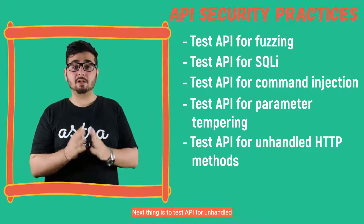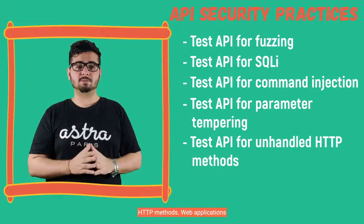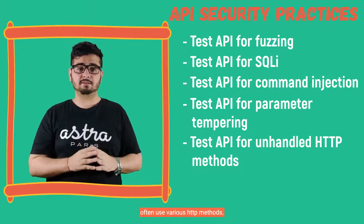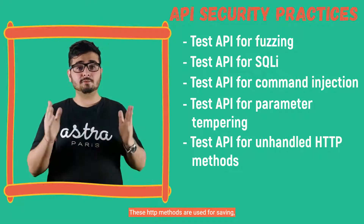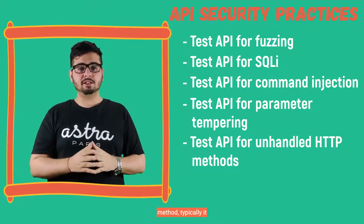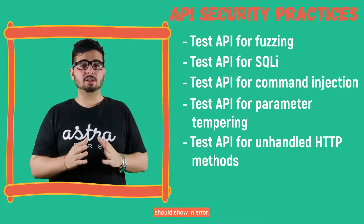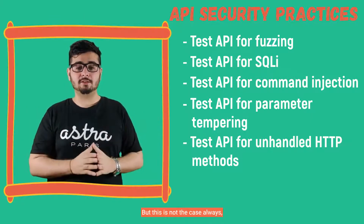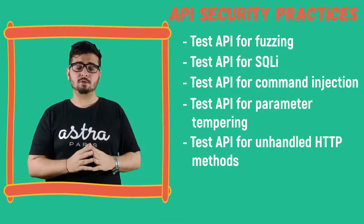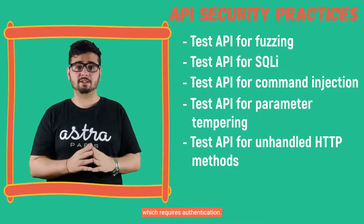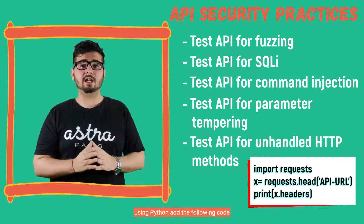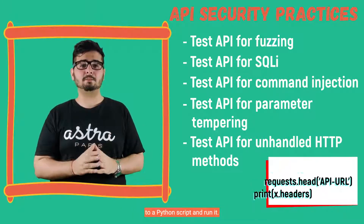Next, test API for unhandled HTTP methods. Web applications communicating using API often use various HTTP methods for saving, removing, or getting data. If a server does not support an HTTP method, typically it should show an error, but this is not always the case for vulnerable APIs. To test for this vulnerability, make a HEAD request to your API endpoint which requires authentication. There are several ways to send HEAD requests — to accomplish this using Python, add the following code to a Python script and run it.